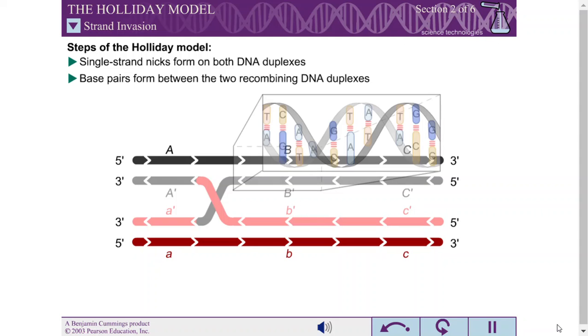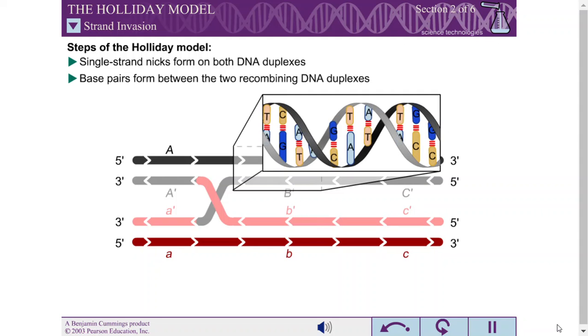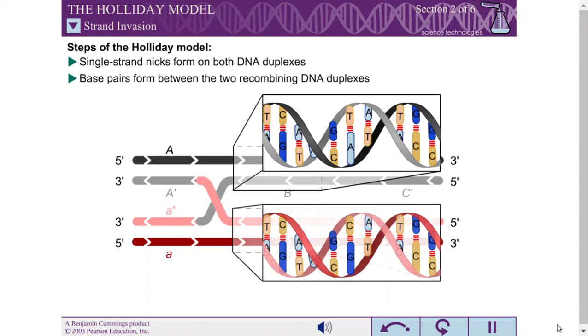Remember, since the duplexes are identical or nearly identical in sequence, each of the NIC strands is able to base pair with the uncleaved strand on the opposite duplex.